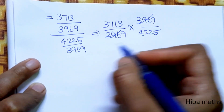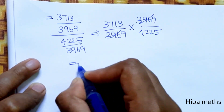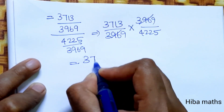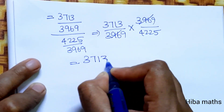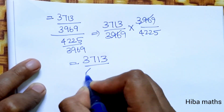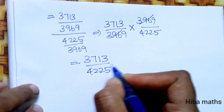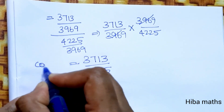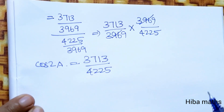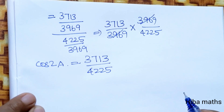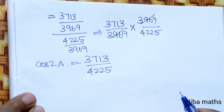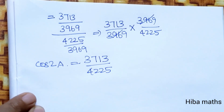After cancellation, the answer is 3713 by 4225. So cos 2A is equal to 3713 by 4225. If you have any doubt, please mention it in the comment section. Thank you so much for watching.